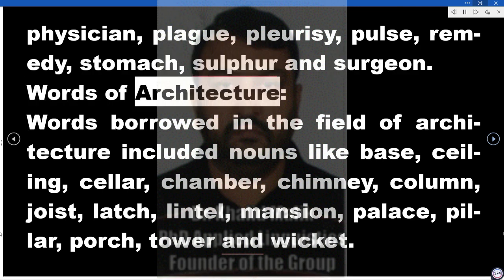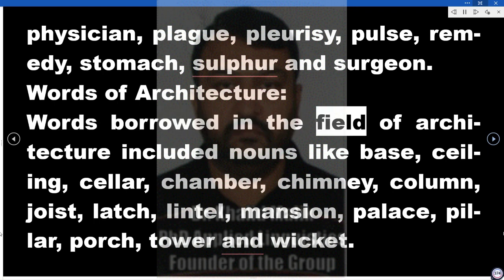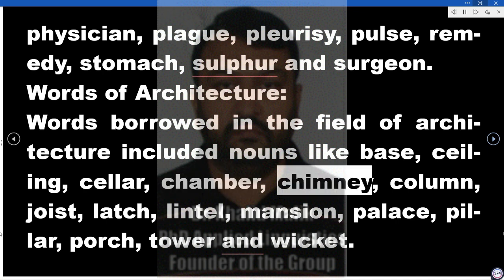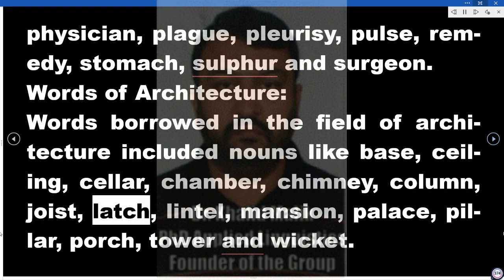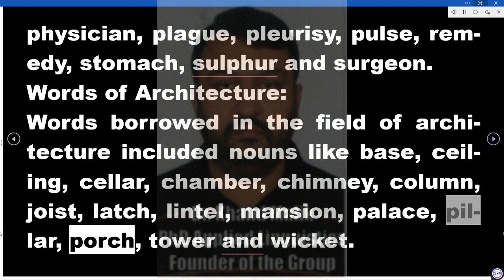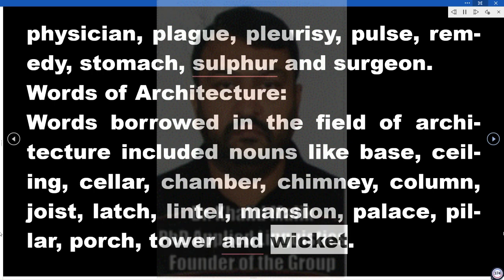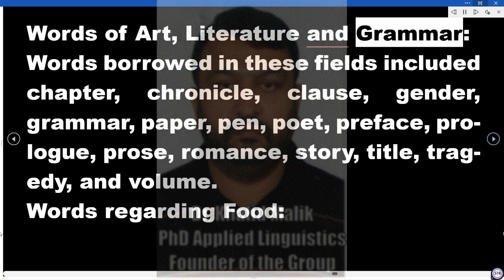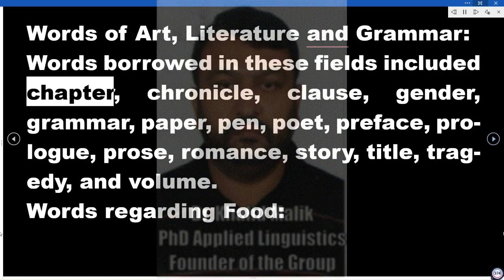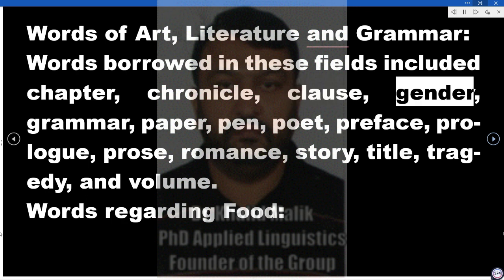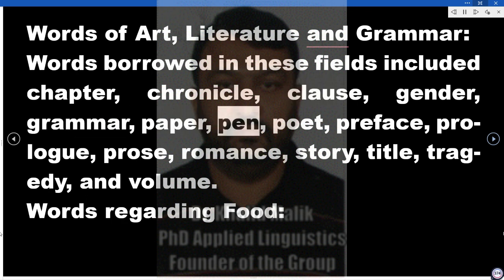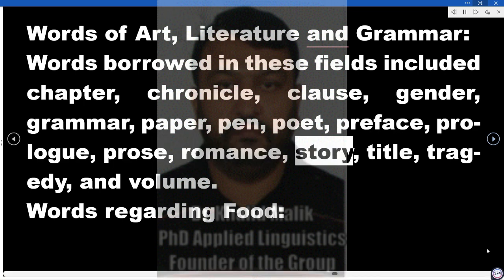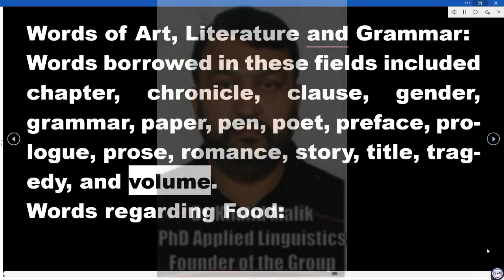Words of architecture. Words borrowed in the field of architecture included nouns like base, ceiling, cellar, chamber, chimney, column, joist, latch, lintel, mansion, palace, pillar, porch, tower, and wicket. Words of art, literature, and grammar. Words borrowed in these fields included chapter, chronicle, clause, gender, grammar, paper, pen, poet, preface, prologue, prose, romance, story, title, tragedy, and volume.